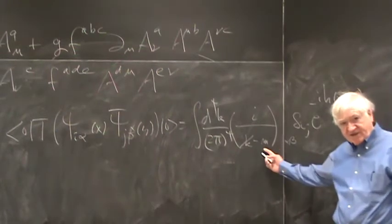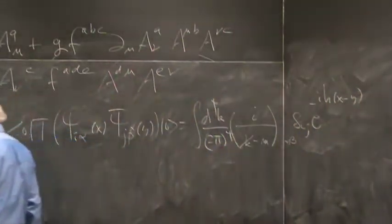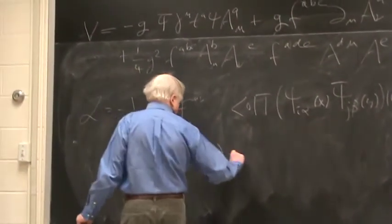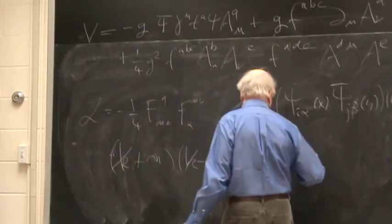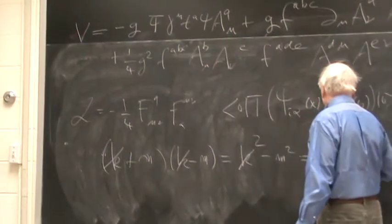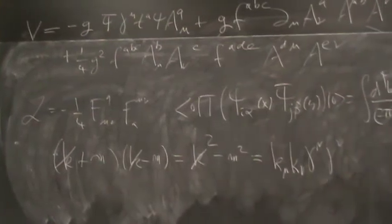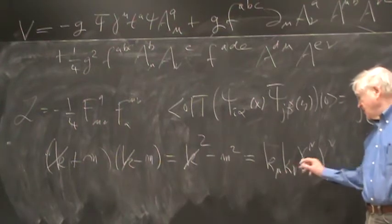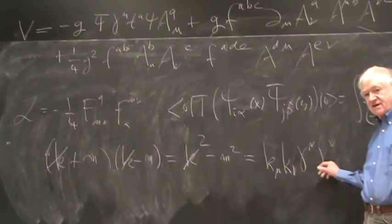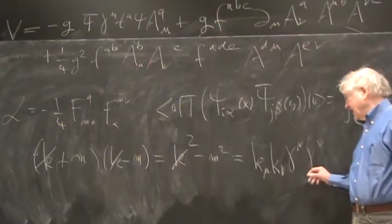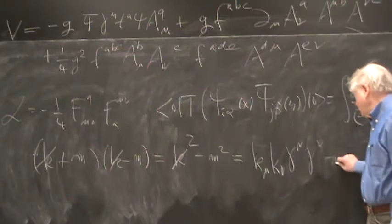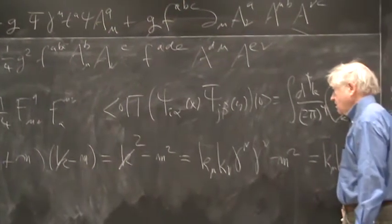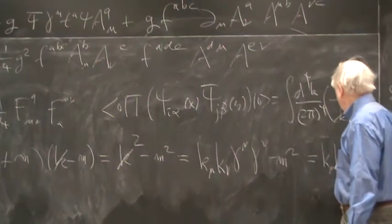And you might be puzzled by this, but there's a simple way of figuring out what that is. Namely, you take k slash plus m times k slash minus m. What you get is k slash squared minus m squared, and this is k mu k nu gamma mu gamma nu. And so this is, since this is symmetric, you can symmetrize this.